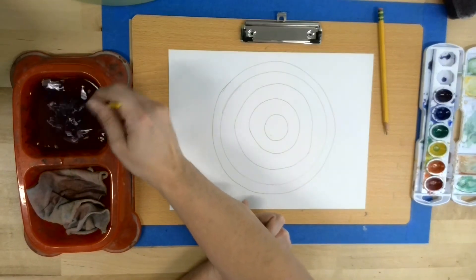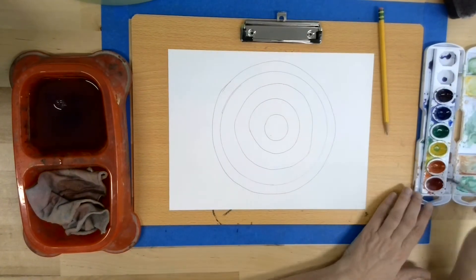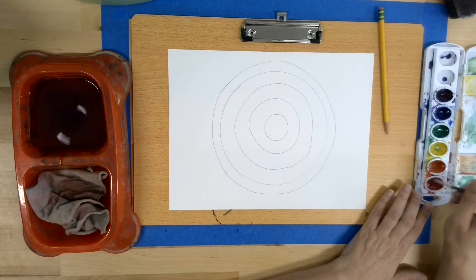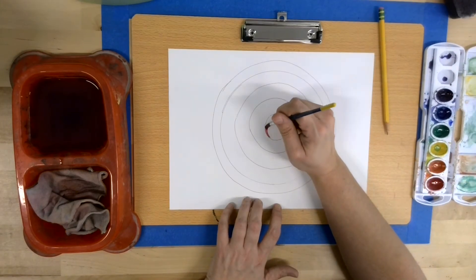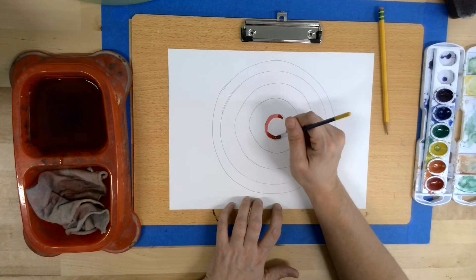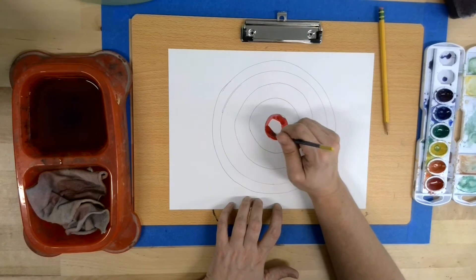Now we need to wake up our paint, so dip your brush in the water and select your color. Use the pencil lines as a guide to outline your first color, then fill it in.